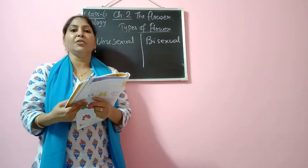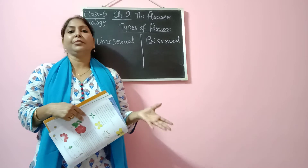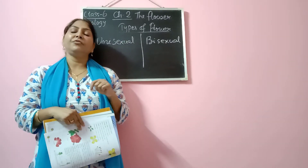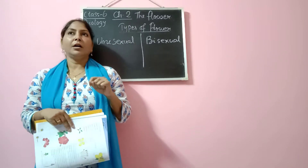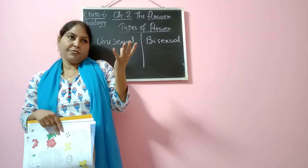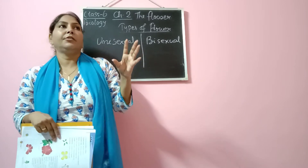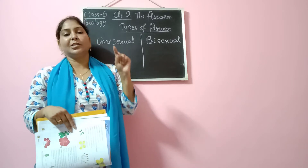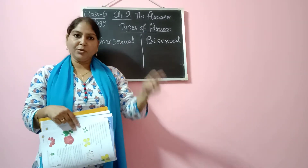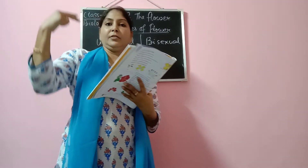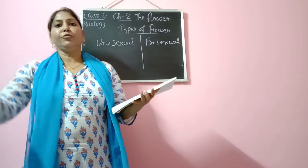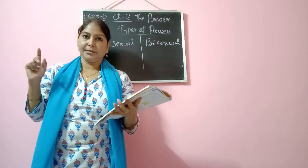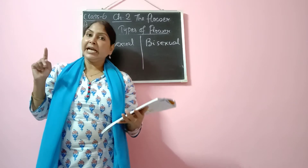Now we will discuss the function of flower. So far we have learnt what is a flower, the parts of flower, and the types of flower. What is the function of flower? Flower is basically the reproductive part of the plant — it helps in reproduction. It has got male and female reproductive parts which will fuse together and in future will form the fruit. Then the fruit will bear the seeds and then seeds will grow into a new plant. That is why the flower is called the reproductive part of the plant. The function of flower is that it helps in reproduction — that is the first function.